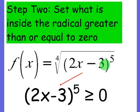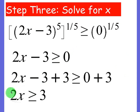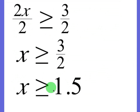We take what's inside the radical, set it greater than or equal to 0, and solve. To remove the power of 5, we raise both sides to the 1/5 power — and 0 to the 1/5 is still 0. Then we add 3, and divide by 2 to get x by itself. We get x is greater than or equal to 3/2, which means x is greater than or equal to 1.5. We can plug in 1.5 or anything bigger, but anything smaller won't work.